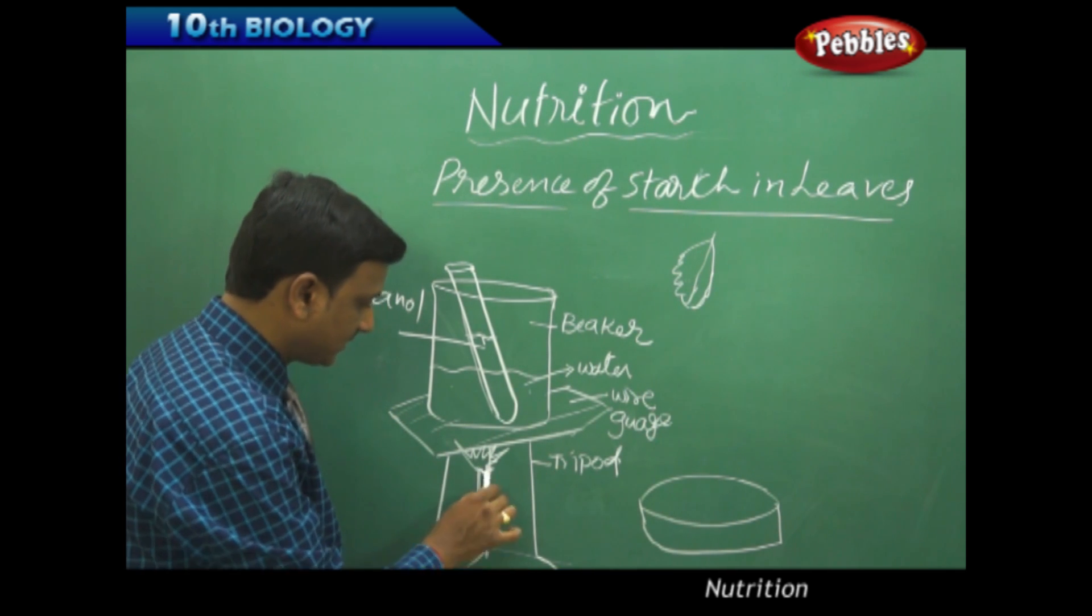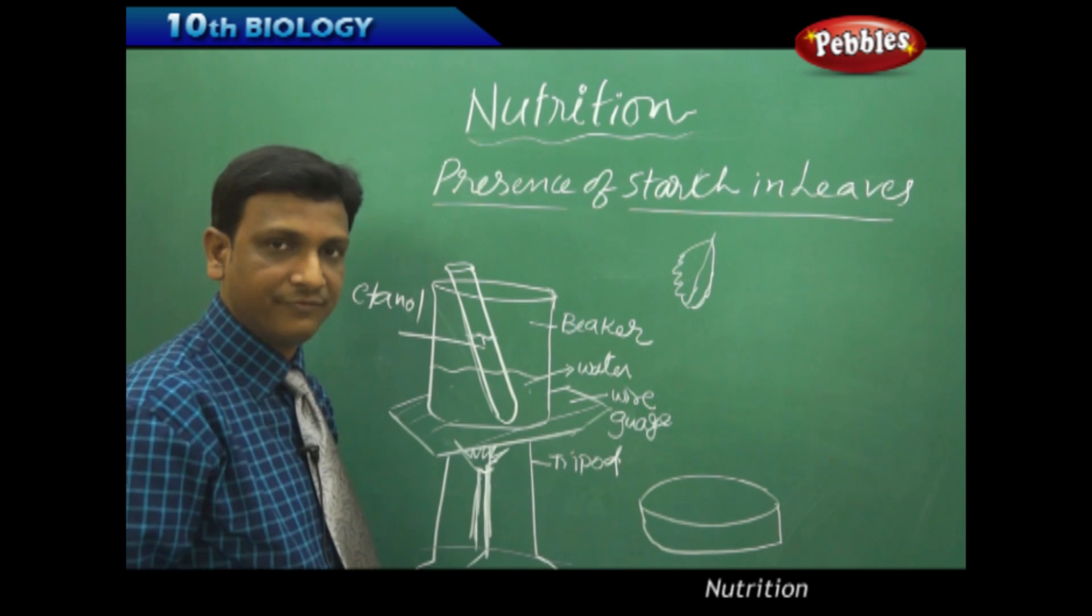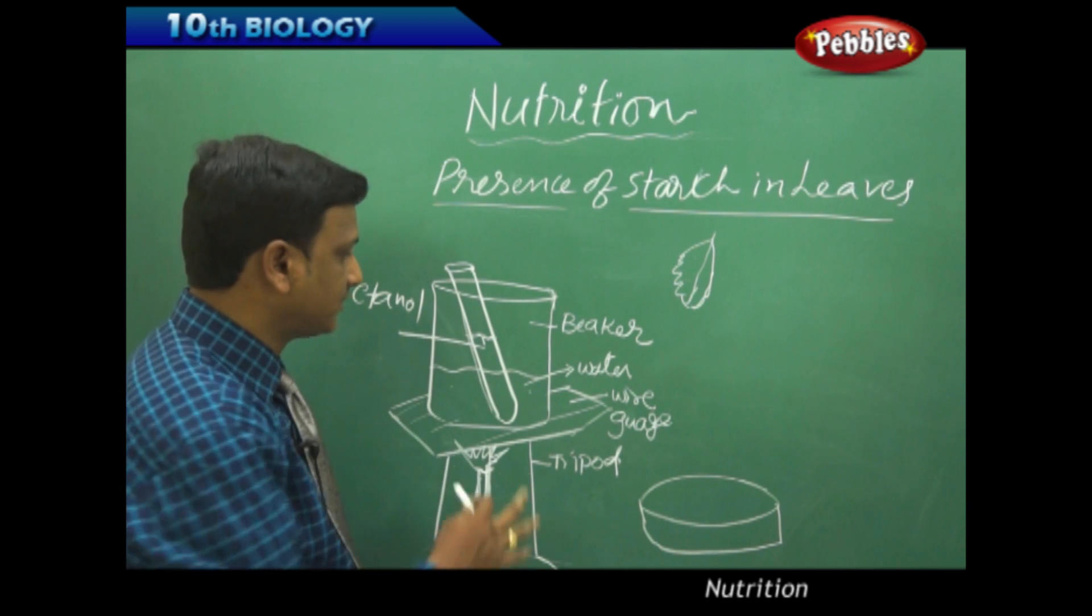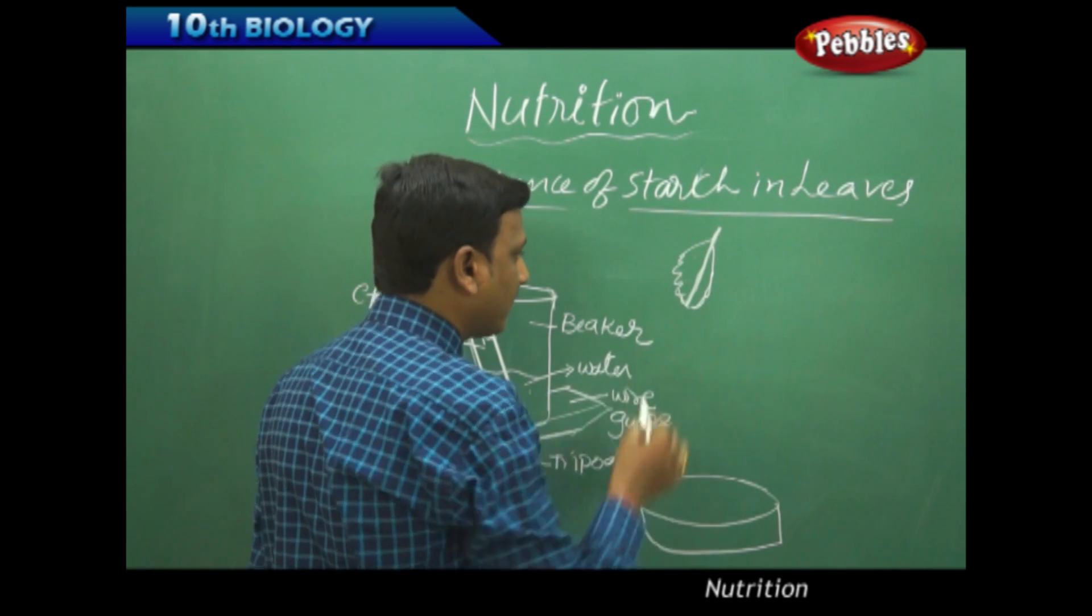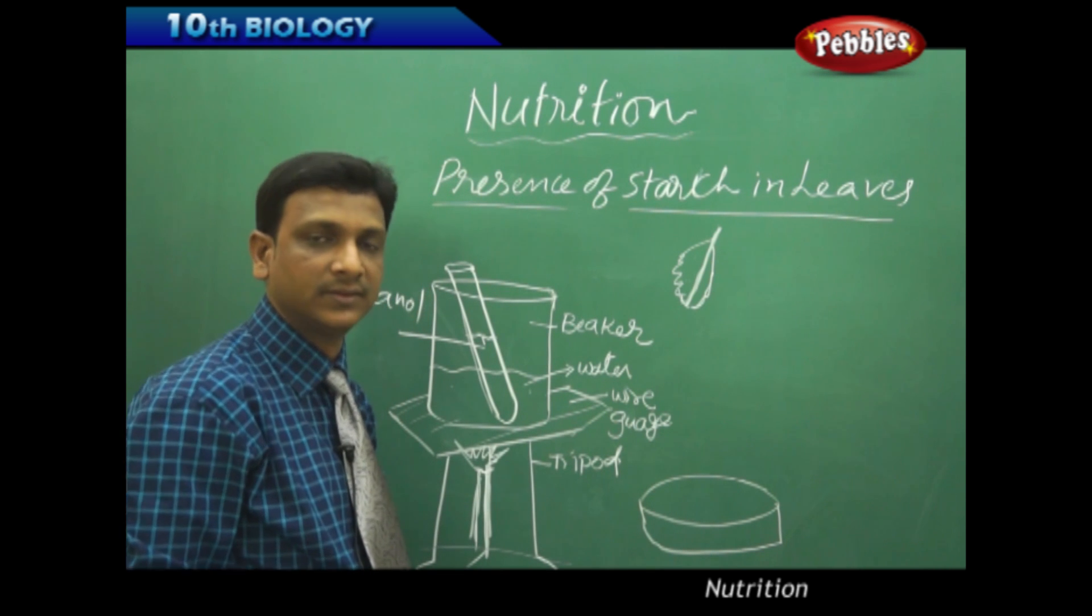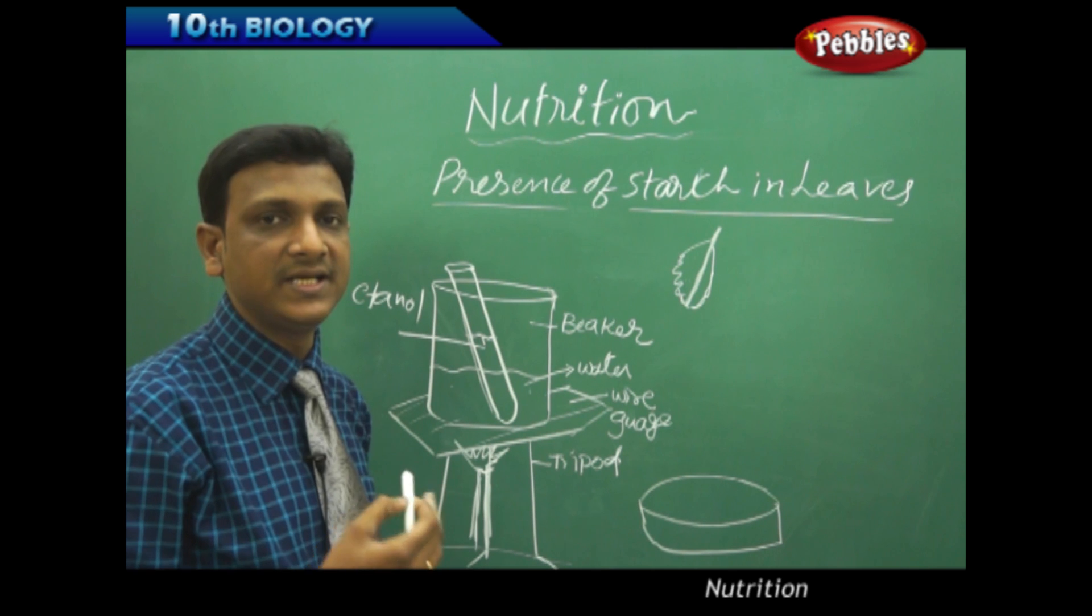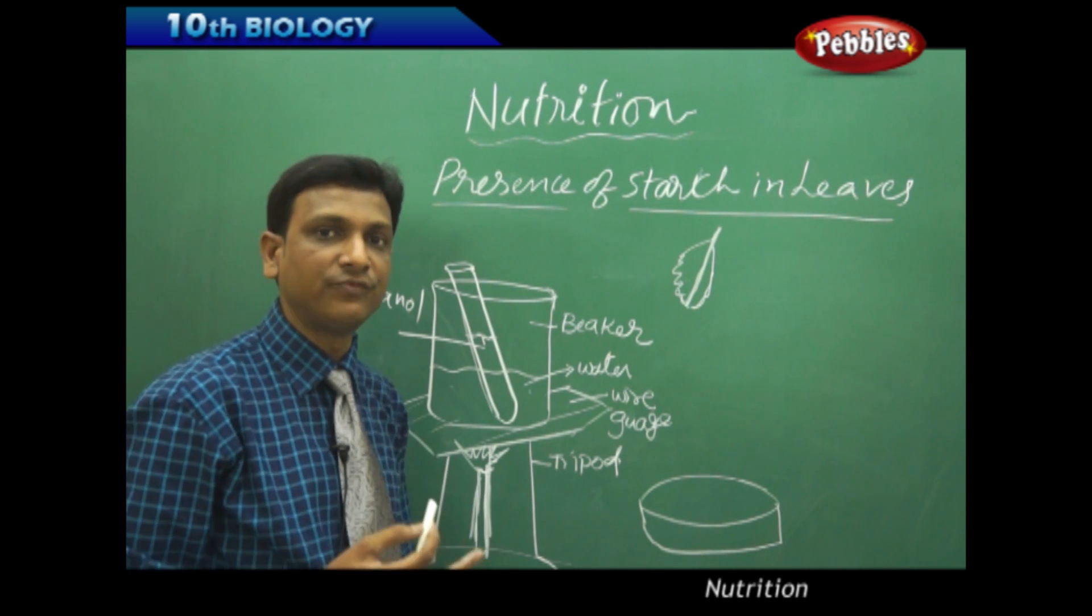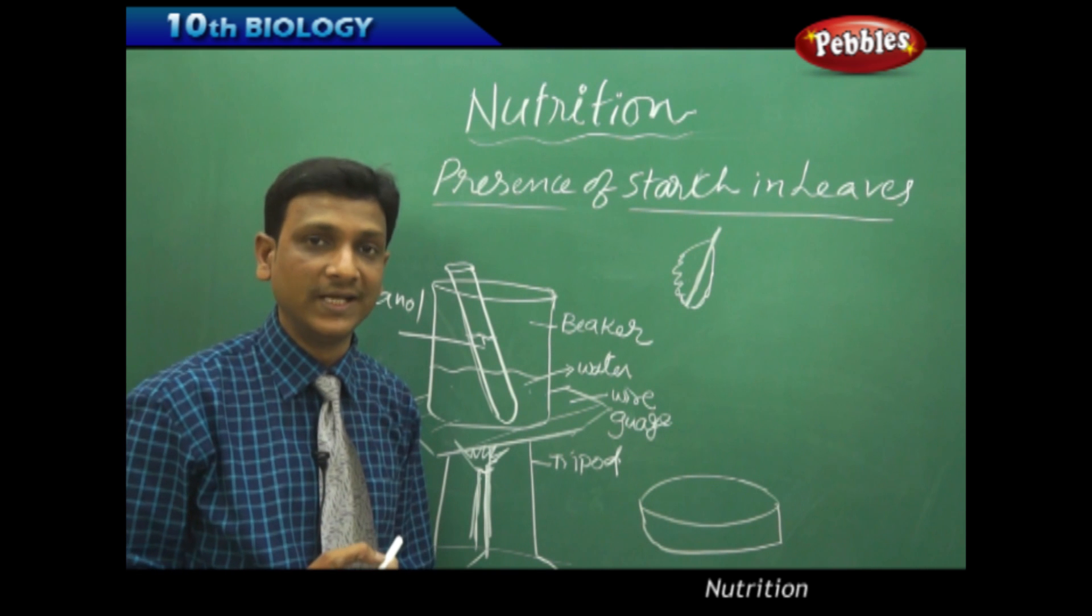Here we have a setup and it is kept above a burner, which is burning. So this is to heat. Now the leaf which we have collected is green in color. To test with the iodine, first the leaf has to be decolored. The color of the leaf should be removed. So how can we remove the green color of a leaf?